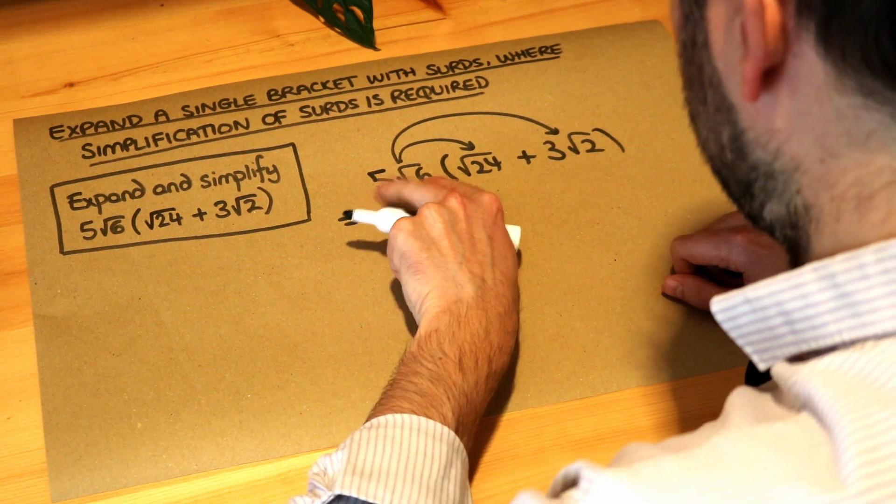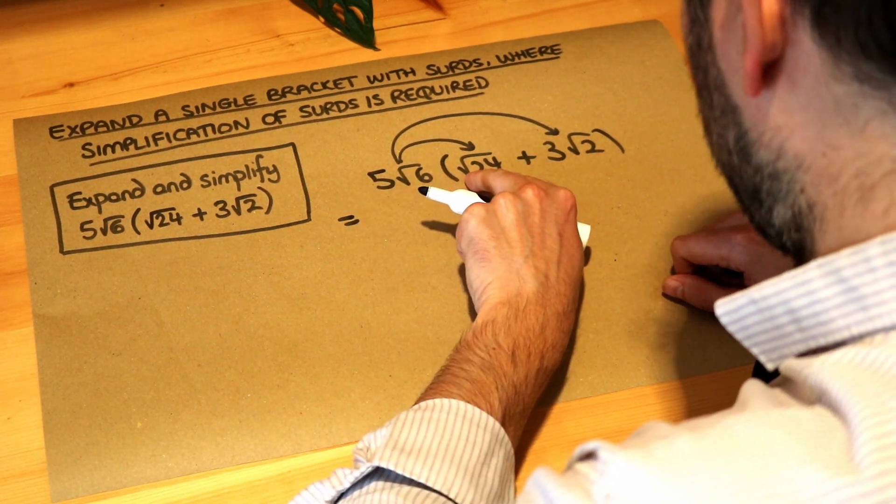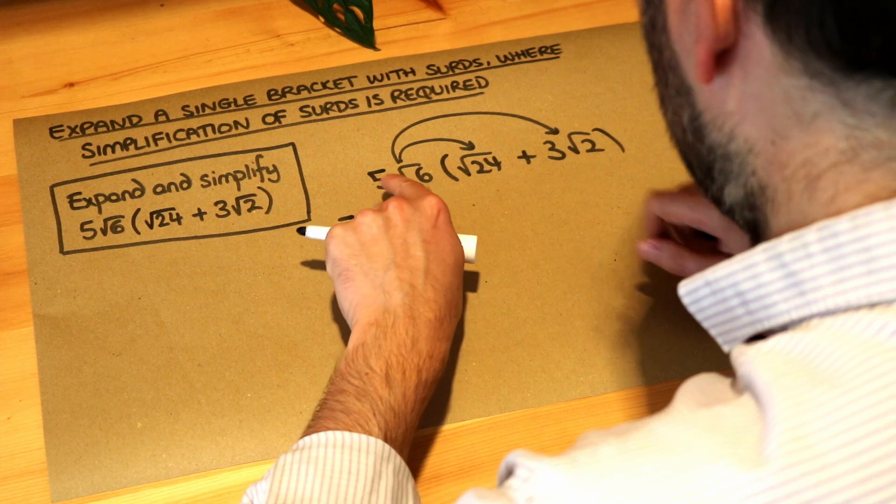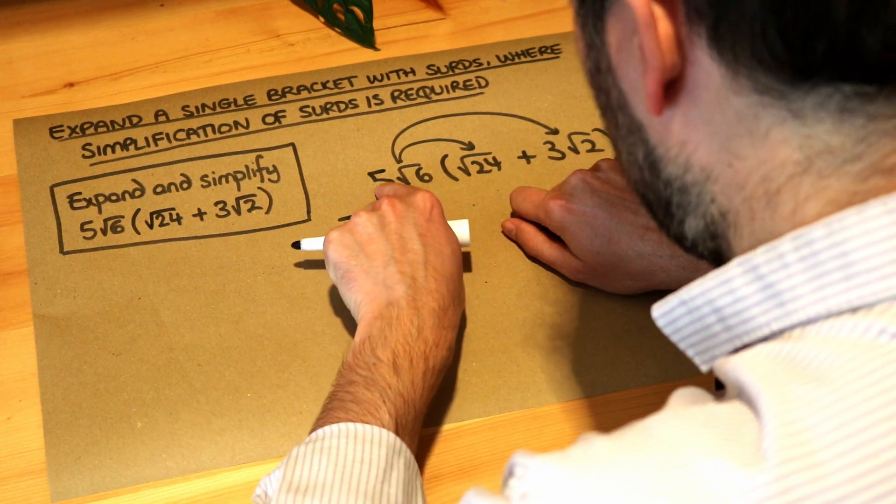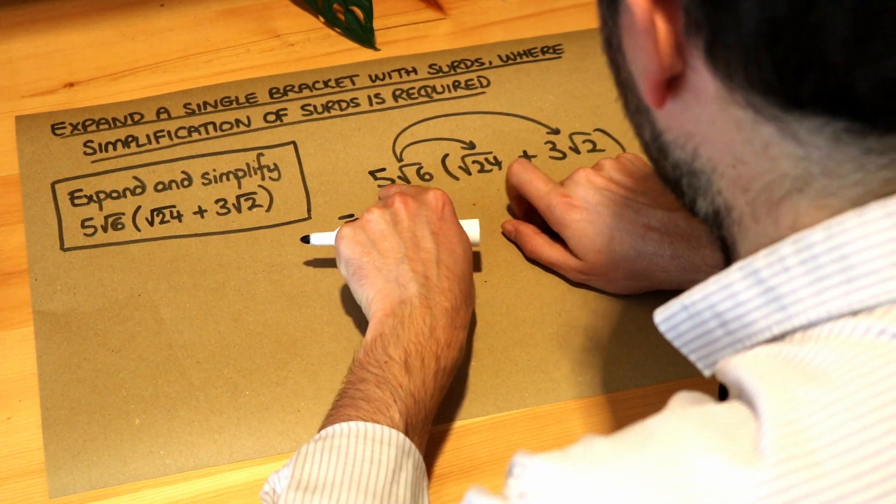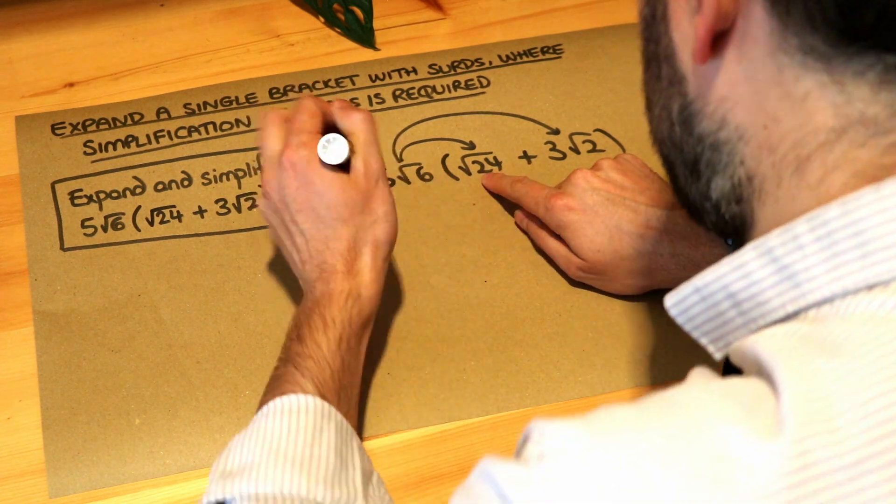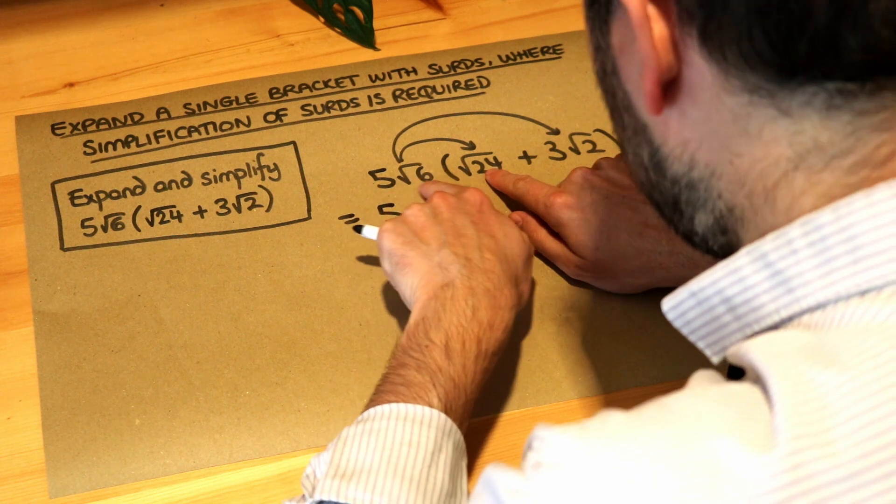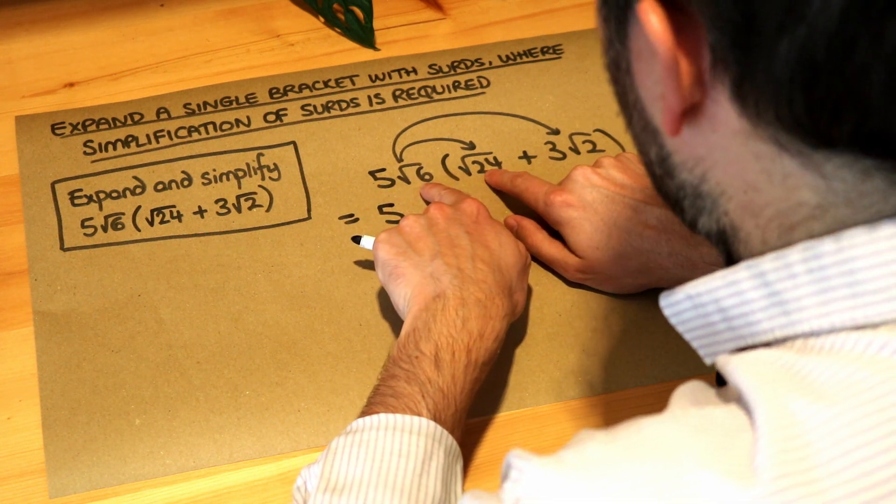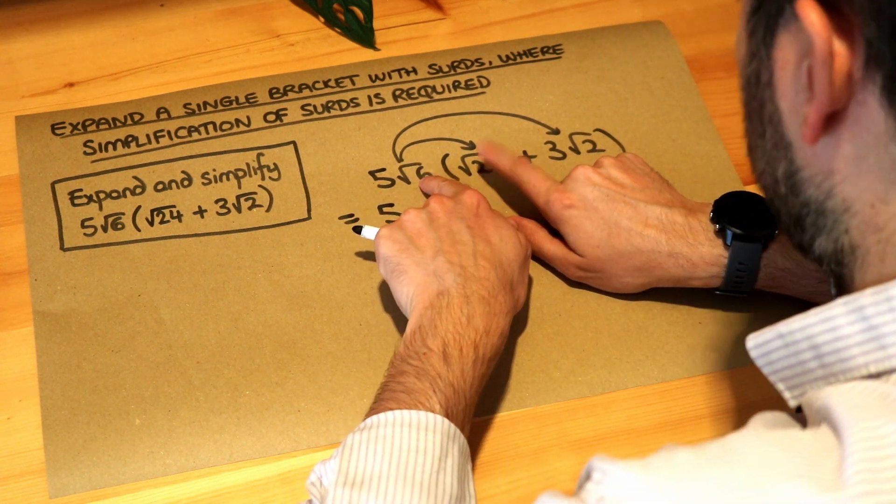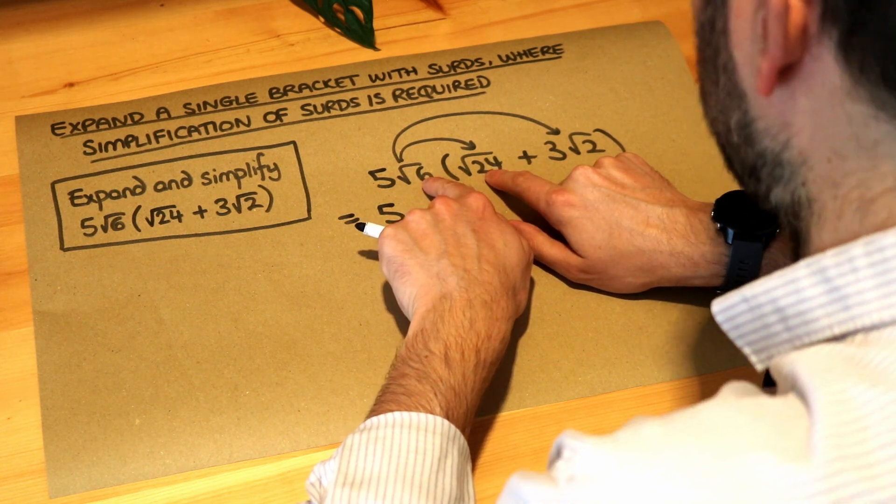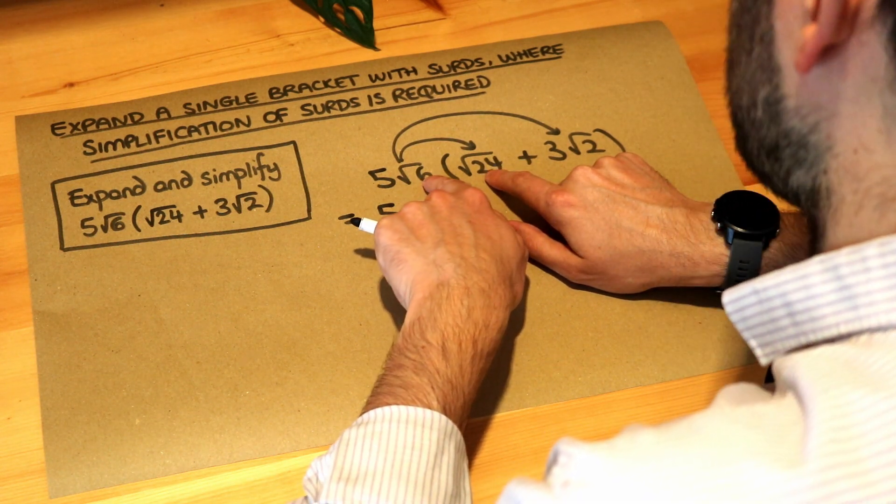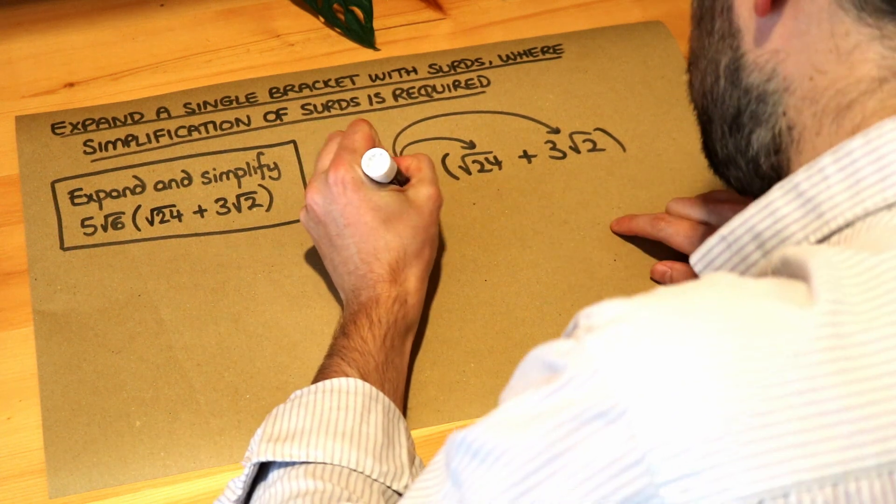We want to do 5 root 6 multiplied by root 24 first. Remember we times the non-surds together first, so we've got 5 here, and there's no non-surd there, so we're just gonna have the 5. Then we times the surds together, so root 6 times root 24. When you times surds together, you just multiply the two numbers, so 6 times 24, and that's actually 144, so we've got root 144.